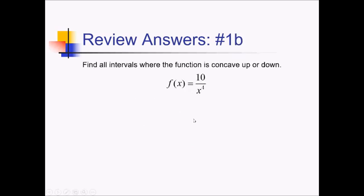On this problem, I want to figure out the intervals where the function 10 over x to the fourth is concave up or down. To figure that out, we need to analyze the second derivative to see where it's positive or negative. Before we can do that, we need to take the first and second derivatives. To make life a little easier, I'm going to rewrite this with a negative exponent as 10x to the negative fourth.